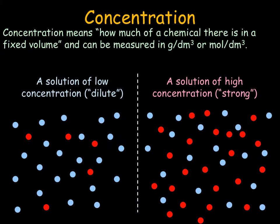Before we can look at diffusion, osmosis, and active transport, we need to be aware of what we mean by concentration. Concentration is how much of a chemical there is in a fixed volume. If something is dilute or low concentration, it will have very few solute molecules within lots of solvent. In a strong or high concentration, we have lots of solute in a lower volume of solvent. A concentration gradient is when we have a barrier between these two. The one on the right is of higher concentration than that of the left, so the concentration gradient would go from high to low.